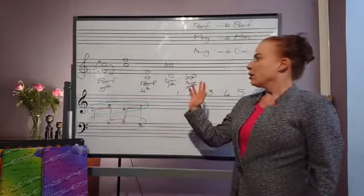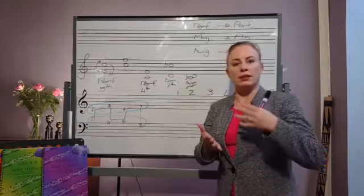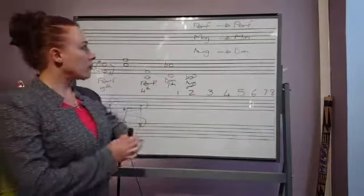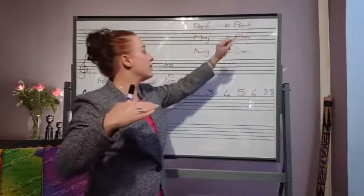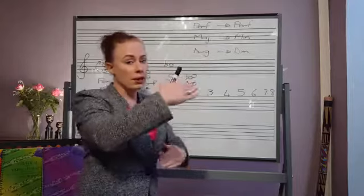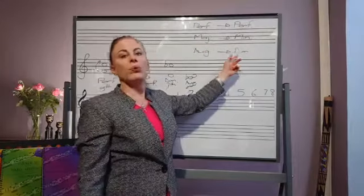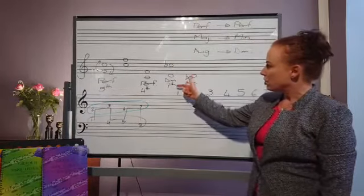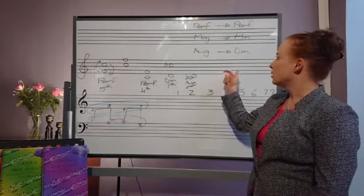There is an easier way than this to quickly work out what the interval name and its quality is. Let's first have a look at the quality. Whenever we have a perfect interval, when we invert it it's going to remain perfect. If we have a major interval it's going to become minor or vice versa. If you have a minor interval it's going to become major. Then if you have an augmented interval it's going to become diminished or vice versa. That's exactly what we had over here: we had a diminished seventh and once we inverted it it became an augmented second.